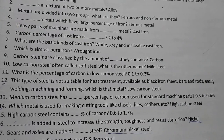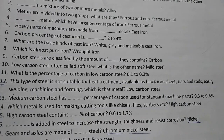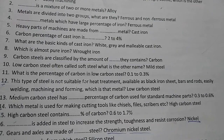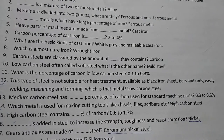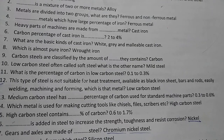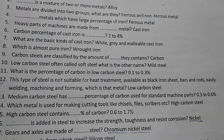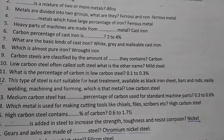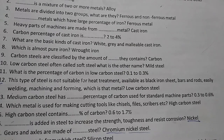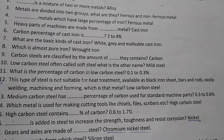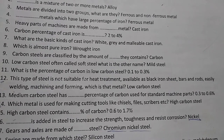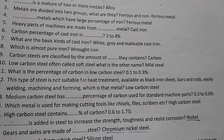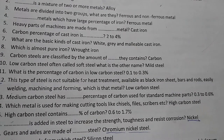High carbon steel is used for making cutting tools like chisels, files, and scribers. High carbon steel contains 0.6 to 1.7 percent carbon.